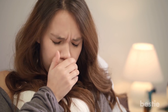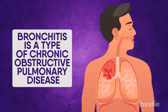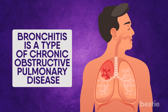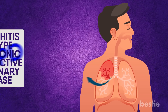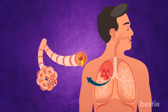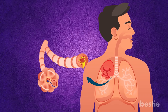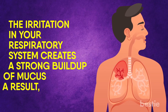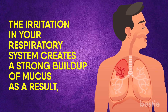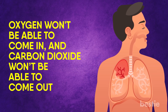Bronchitis is yet another lower respiratory infection to watch out for. It is a type of chronic obstructive pulmonary disease — COPD for short. With bronchitis, the lining of your bronchial tubes becomes inflamed. These tubes are important as they carry air in and out of the lungs. The irritation in your respiratory system creates a strong buildup of mucus, and as a result, oxygen won't be able to come in and carbon dioxide won't be able to come out.